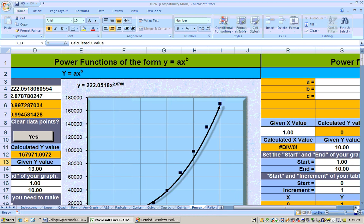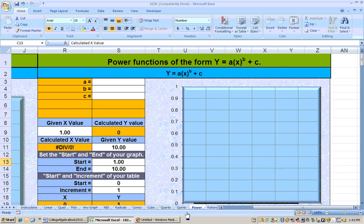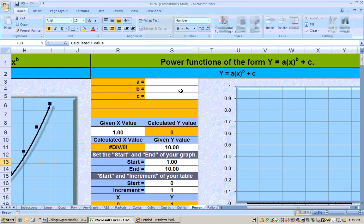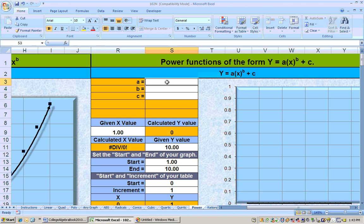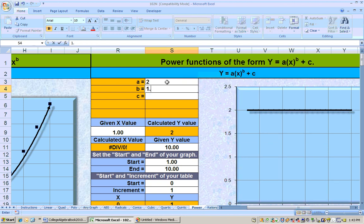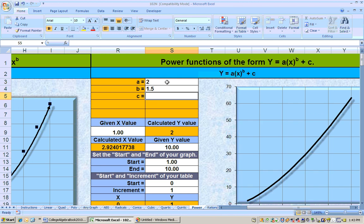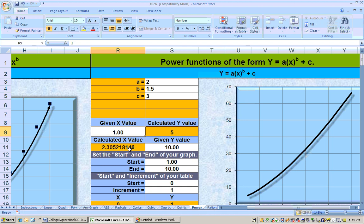Now, on this sheet, there's areas farther to the right where you can do power functions, put in the A, B, and C to graph power functions that have been shifted in some way. So, for example, if we had a function, let's say 2x to the 1.5 power plus 3, then that's the graph of that function, and I can put in an x to get a y value or put in a y to get an x.